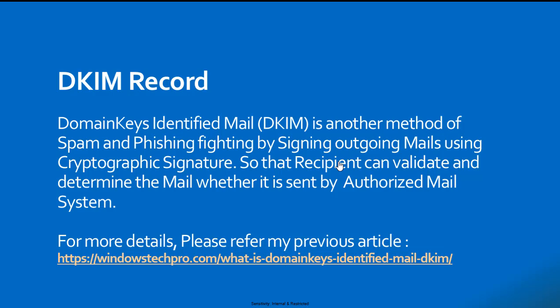But in DKIM, we inject signatures into the mail. We inject private keys of your domain into the mail headers and create a text record in the public DNS called the public key. When the recipient domain receives your mail and identifies a DKIM signature, it fetches the public key from your public DNS and compares it with the private key in the mail header. If both match, the mail is considered genuine and delivered to their mailbox. If validation fails, the recipient domain can delete the mail or deliver it to junk.